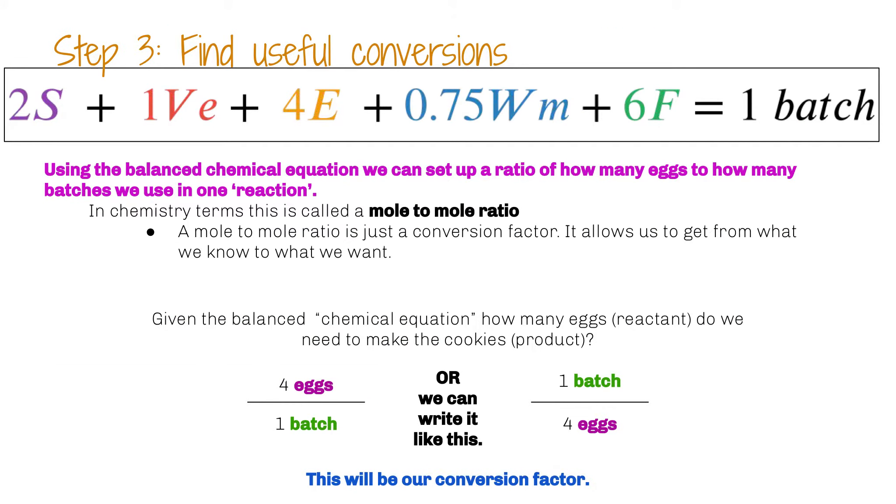So finding my useful conversion. So using the balanced equation, we can set up the ratio of how many eggs to how many batches we can use in one reaction. So in chemistry, we call it a mole-to-mole ratio. So a mole-to-mole ratio is just a conversion factor. It allows us to get from what we know to what we want. So given the balanced equation, how many eggs, which are our reactants, do we need to make the cookies or my product?